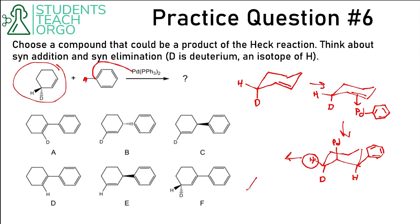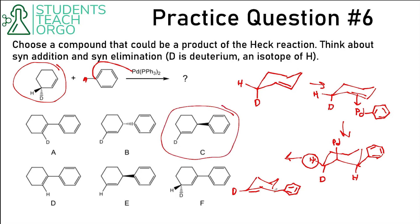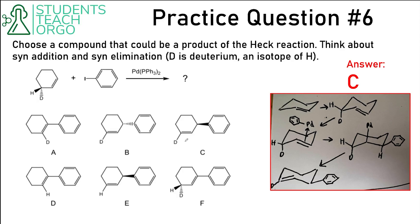That leads to the final product where the deuterium remains, the new double bond forms, and the six-membered ring sticks off — so the answer is C, where the six-membered ring is wedged going up and the deuterium remains because the hydrogen was pulled. This is probably the most challenging concept in these organometallic videos. If you're a student at Stony Brook, don't be too worried — I haven't seen a question like this on a test in a few years. Don't waste too much time studying syn elimination and syn addition.